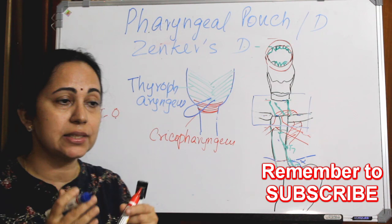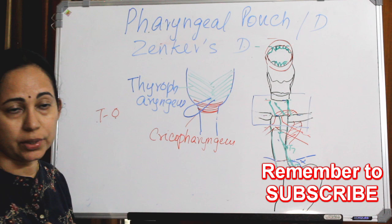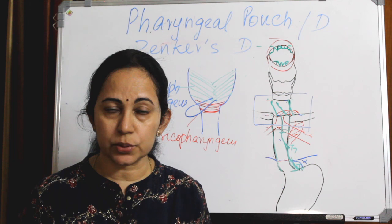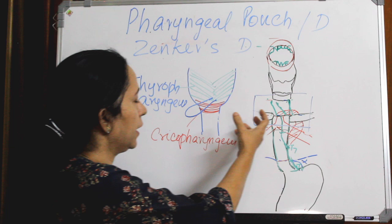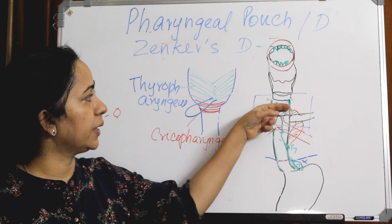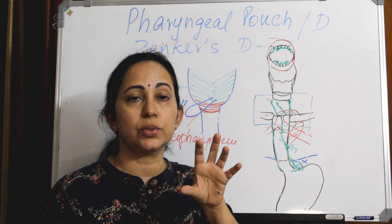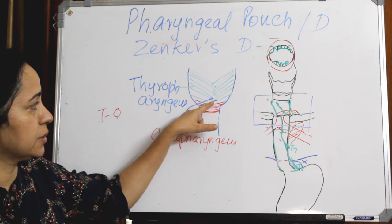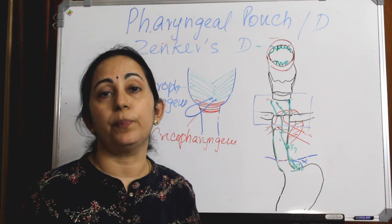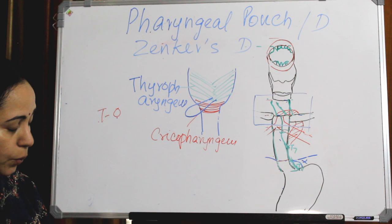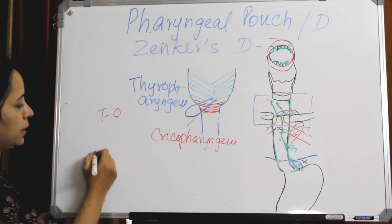Through that weak area comes the pharyngeal pouch, or Zenker's diverticulum. There is a weakness in the posterior wall of the esophagus. When there is a neuromuscular incoordination during swallowing, the cricopharynx will not open in this area, but the food is pushed down. So the mucosa will try to escape through this weak part, causing an outpouching. This is due to neuromuscular incoordination, especially in old age. It is a posterior diverticulum.